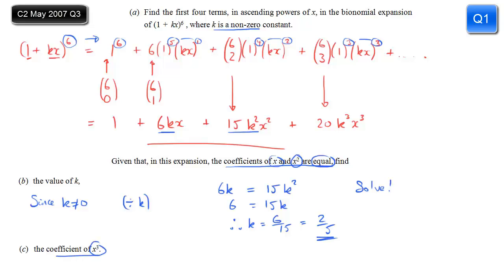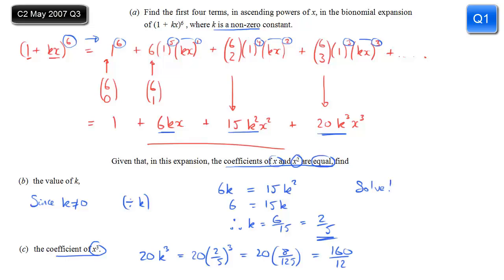Part C just wants the coefficient of x³. Looking up at our expansion, it's 20k³. We know what k is now, so: 20 lots of (2/5)³ is 20 lots of 8 over 125. So 20 times 8 is 160, giving 160 over 125, which cancels down to 32 over 25. And that is the answer to part C.